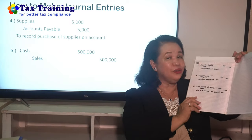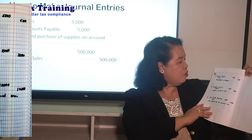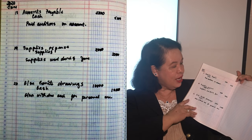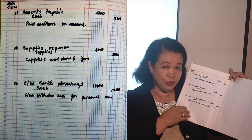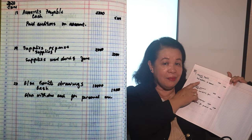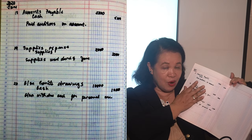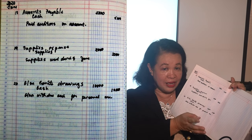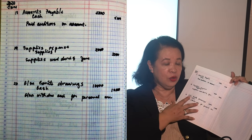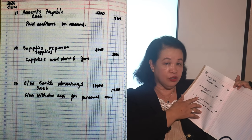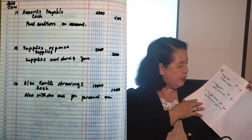This is the journal entry for accounts payable on June 18. I paid 5,000 for the supplies I bought on credit. The entry: debit accounts payable because I reduced my payable, credit cash because I paid the debt. Explanation: 'Paid creditors on account' — I paid the debt.